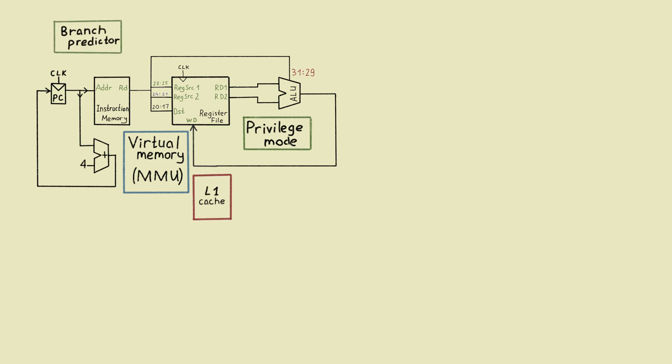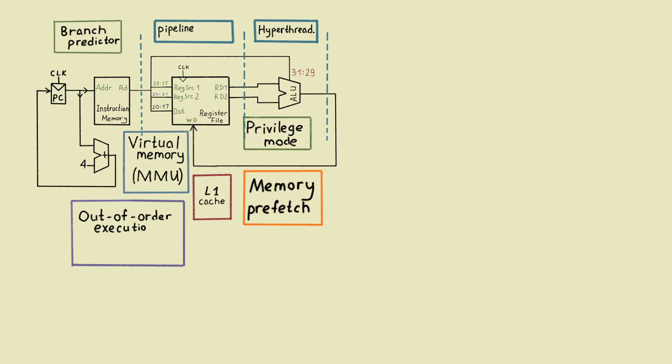We can do a lot. CPU caches, branch prediction, out-of-order execution, hyper-threading, memory prefetching. And again, all these optimizations should be completely invisible for any software. All these tricks are usually not parts of the instruction set, but they are very important to make a high-end chip.